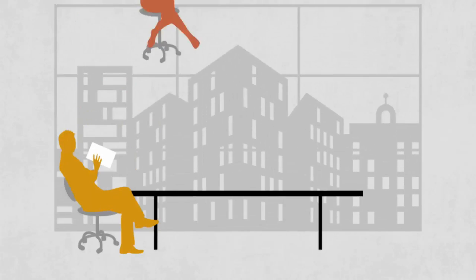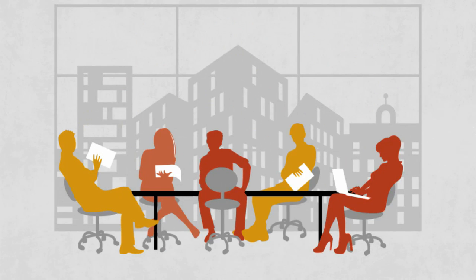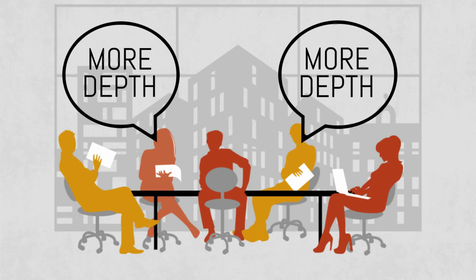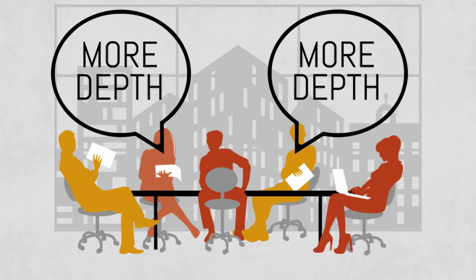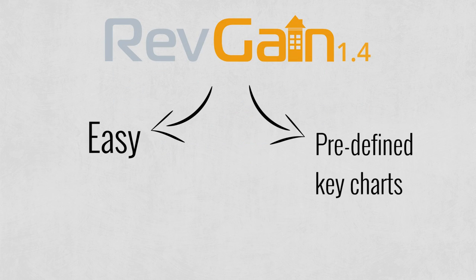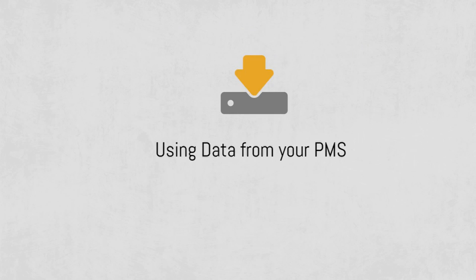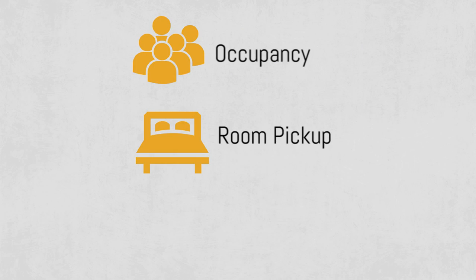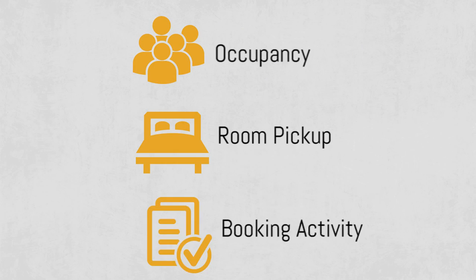In our discussions with customers, a regular comment we heard was that you wanted to see more depth in Revgain's reporting. We've added a whole new reporting module in this release and made it easy to use by pre-defining the key charts that help you track business trends. Using data from your PMS, we track occupancy, room pickup and booking activity for any time period you choose.